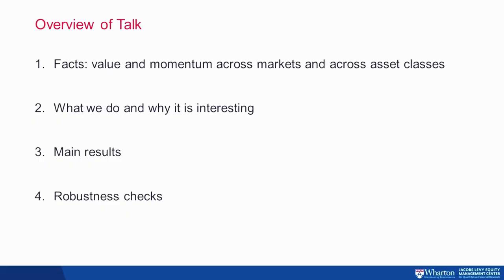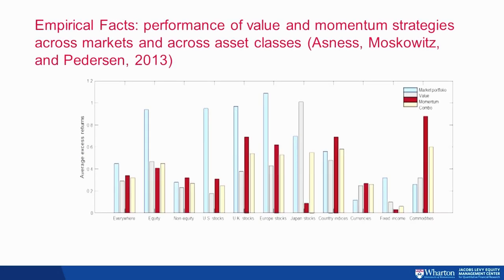First I'll show you the facts — that there is value and momentum excess returns across countries and across asset classes. I'll tell you what we do and why it's interesting, show the main results, and then a battery of robustness tests. These are facts documented by Asness, Moskowitz, and Pedersen in their JF 2013 paper, 'Value and Momentum Everywhere.' The blue lines are excess returns on a market portfolio, the gray bars are value excess returns (the long-short return), red bars are momentum, and Combo depicts a 50-50 equal-weighted combination between value and momentum. Data come from the website of Tobias Moskowitz, monthly data spanning January 1982 to June 2010.